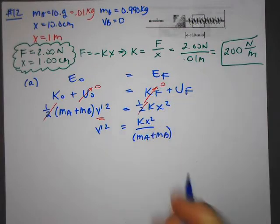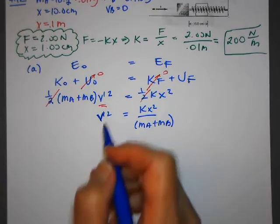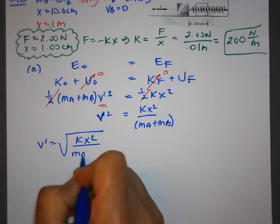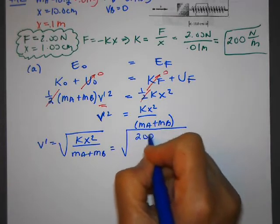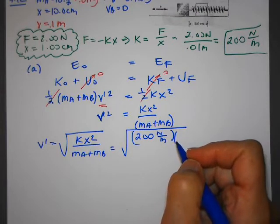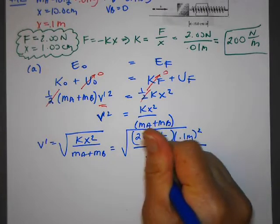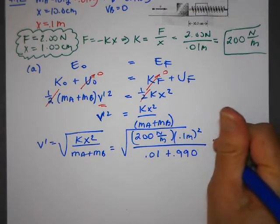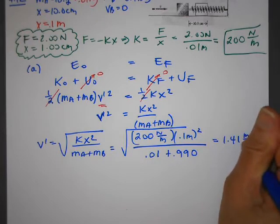And then, again, I'm going to rearrange the equation because I don't want to forget to take the square root at the end. So I'm going to square root both sides. So v prime is the square root of kx squared over ma plus mb. So it's the square root of 200 newtons per meter times x, which was 0.1 meter squared, divided by 0.01 plus 0.990 kilograms. And when I do that on my calculator, v prime comes out to be 1.41 meters per second.